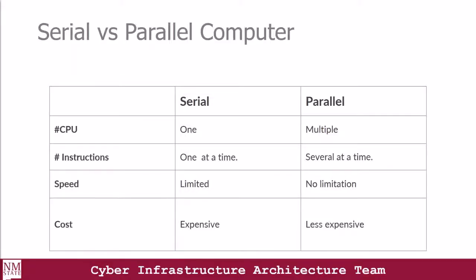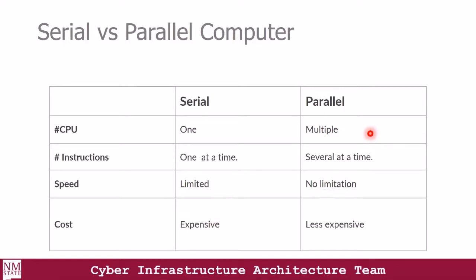Let's compare serial computing versus parallel computing. With serial computers, we just have one CPU that does all the processing. But in parallel computing, we have multiple CPUs or multiple cores that process several instructions at the same time. So over here we have one instruction at a time, but with parallel computing we have several instructions at a given time. The speed in serial computing is limited because you have just one CPU, but there's no limitation with parallel computing. The cost is expensive in serial computing, and in parallel computing it is less expensive.